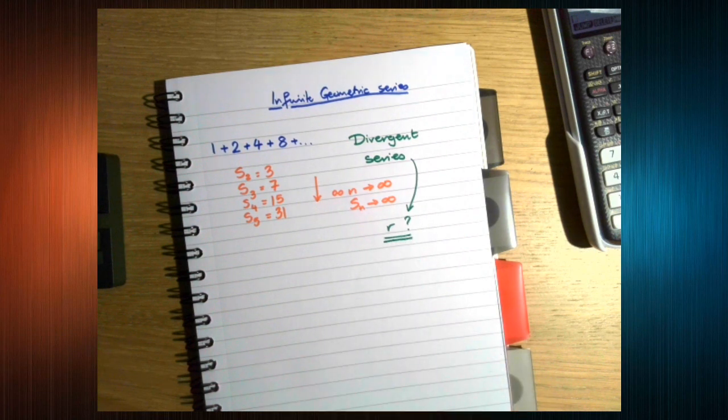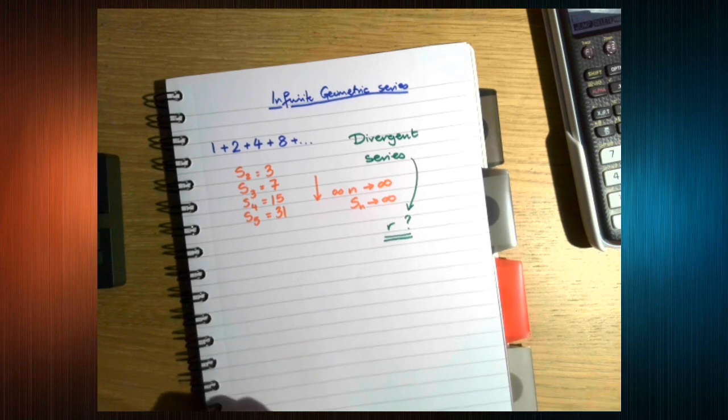For a geometric series or sequence, the common ratio determines whether it diverges or converges.